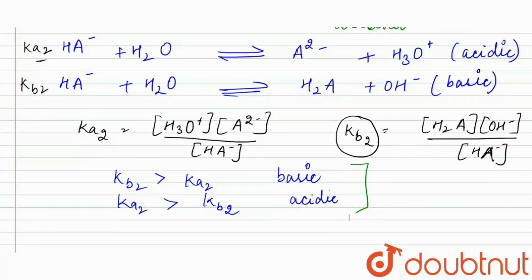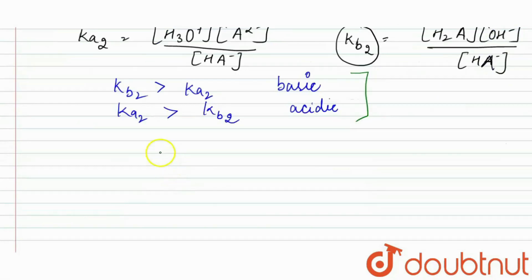In case of amphiprotic salt, if we need to calculate the pH value, pH value is equal to (pKa1 + pKa2) upon 2. It is a general expression for the amphiprotic salt.